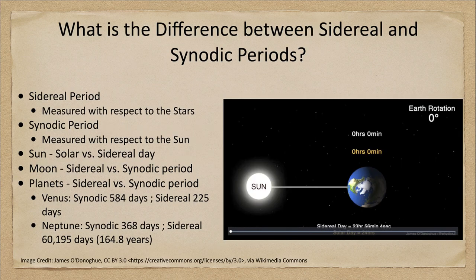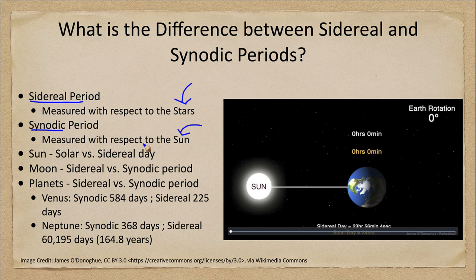So what do we mean by a sidereal or a synodic period? A sidereal period is measured with respect to the stars, while a synodic period is measured with respect to the sun. That actually gives us different measures for things like days or months, or the revolution periods of the planets around the sun.